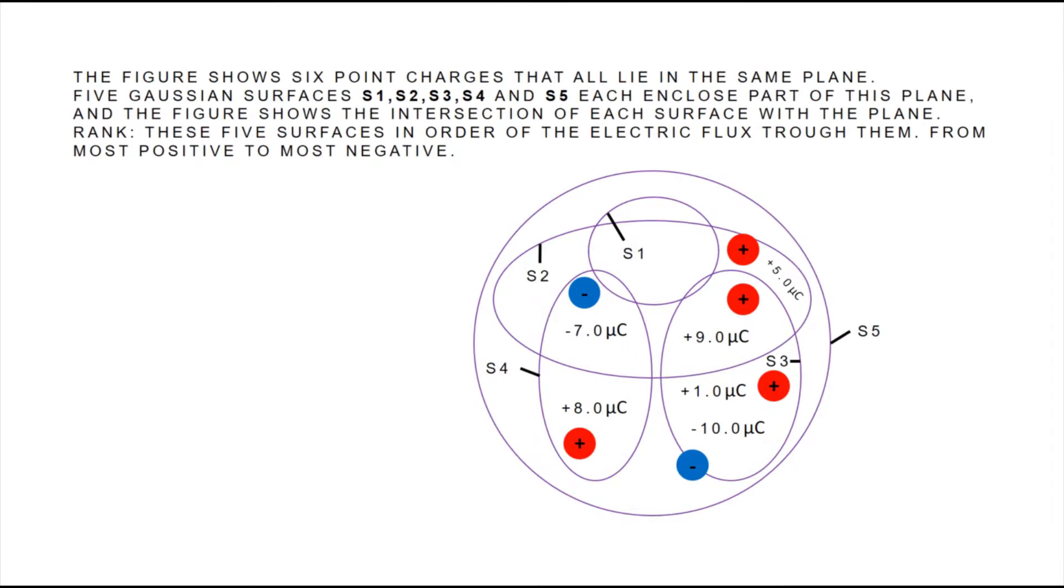The figure shows six point charges that all lie in the same plane. Five Gaussian surfaces, namely S1, S2, S3, S4, and S5, enclose part of this plane. The figure shows the intersection of each surface with the plane. The task is to rank the surfaces in order from most positive to most negative electric flux.